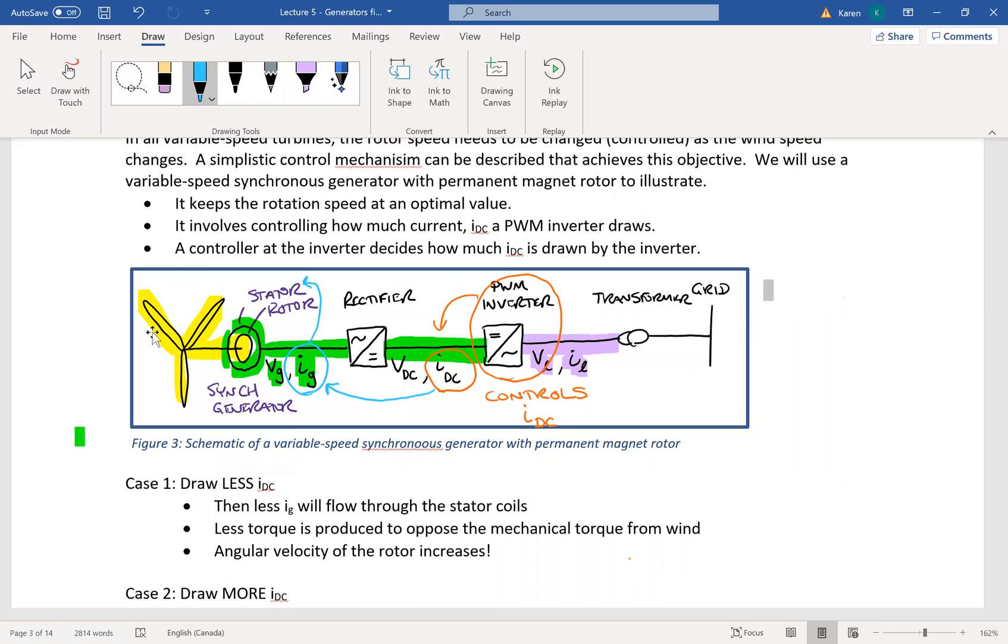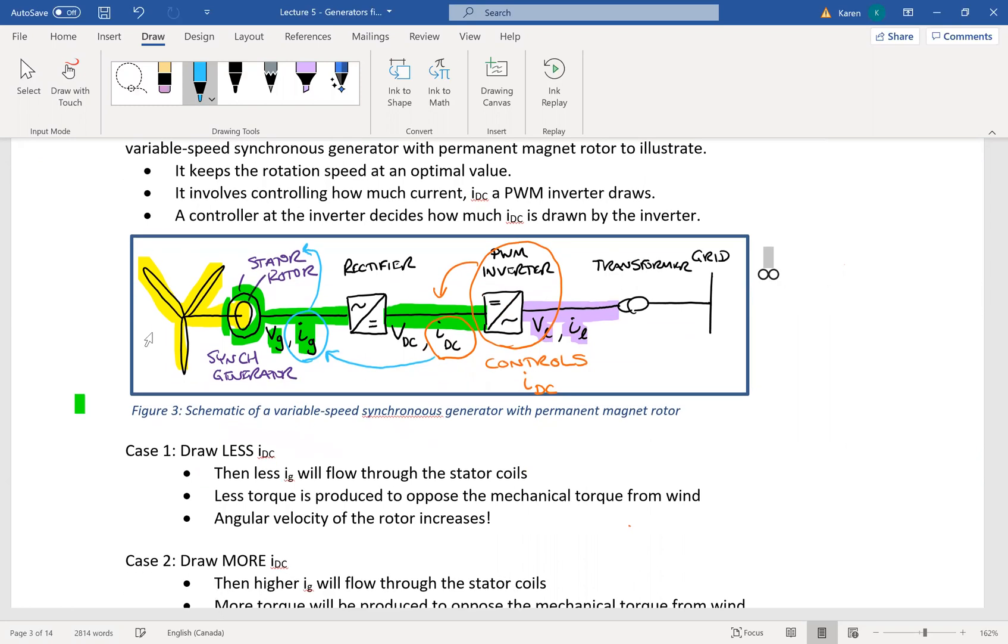Now, how does this help us? Because remember, what we want to do is we're going to control IDC, which has a direct link to I of the generator, which has a direct link to the speed of the rotor.